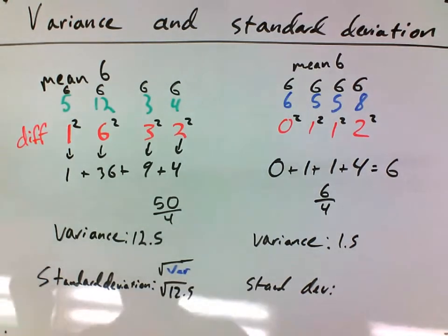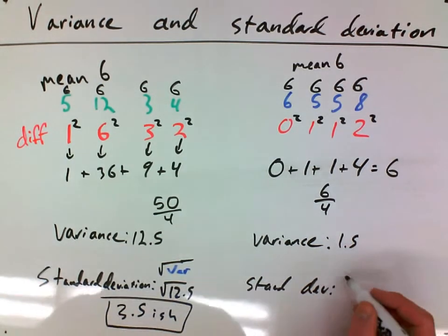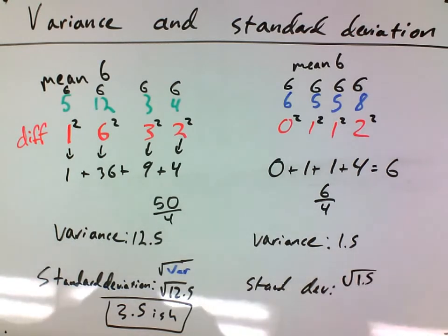And the square root of 12.5 is 3.5-ish. I mean there's a lot of decimals after that, but we'll leave that at 3.5. The standard deviation over here is the square root of that variance, which is 1.5.